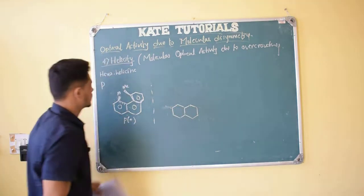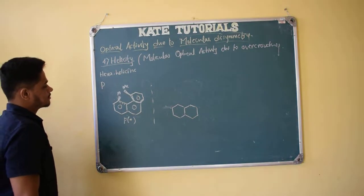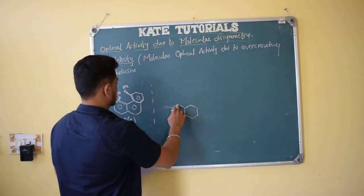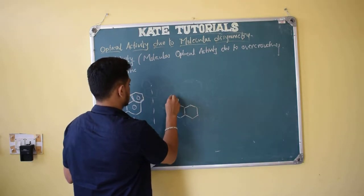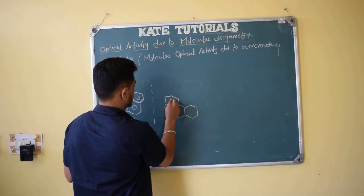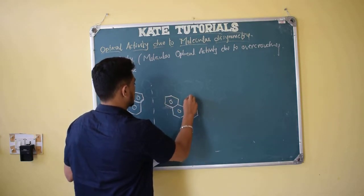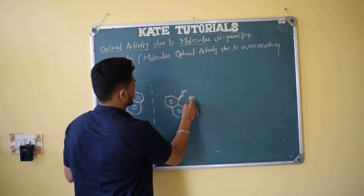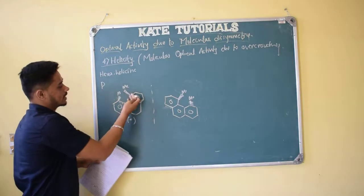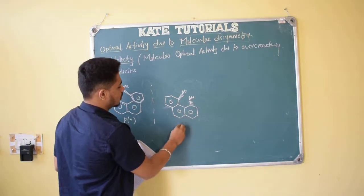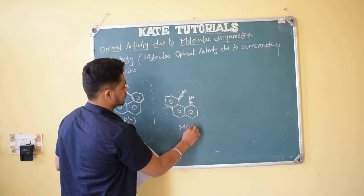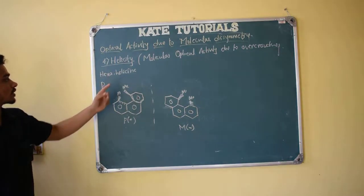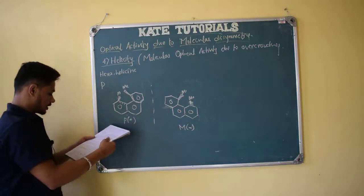Let us now draw this more clearly. Here methyl is on this side and methyl is on that side. The left-handed methyl goes above and the right-handed end is above: that is P plus. If the right-handed end is below, that is M minus. This is how we assign P plus and M minus nomenclature for substituted phenanthrene.